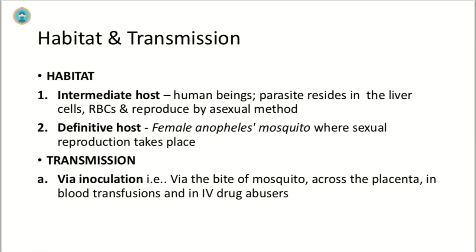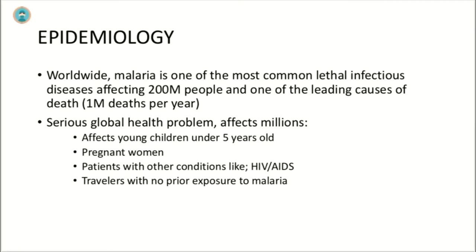Regarding habitat and transmission, there are two hosts. The intermediate host is the human being, where the parasite resides in hepatocytes and red blood cells and reproduces asexually. The definitive host is the female Anopheles mosquito. Transmission of plasmodium occurs via inoculation by mosquito bite, across the placenta, in blood transfusions, and in IV drug abusers.